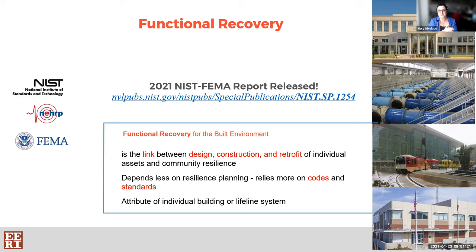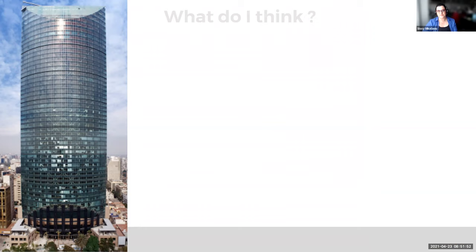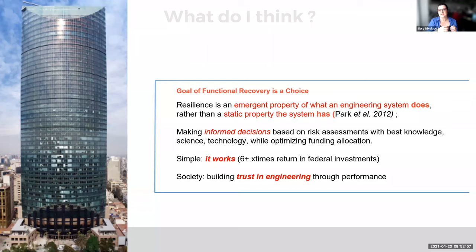Functional recovery for the built environment is the link between design, construction, or retrofit of individual assets and community resilience. Instead of jumping from individual structural design to the big picture of how communities could be resilient, here is a link between the two — which is functional recovery goals in addition to life safety. This is more engineering-based, more reliant on standards we are trying to develop, and addresses individual systems of buildings or lifelines rather than the whole community.